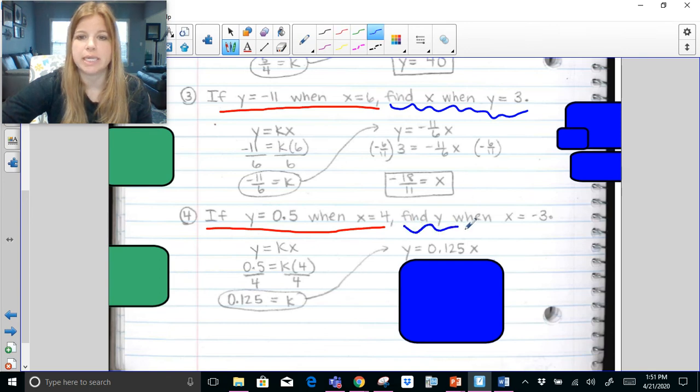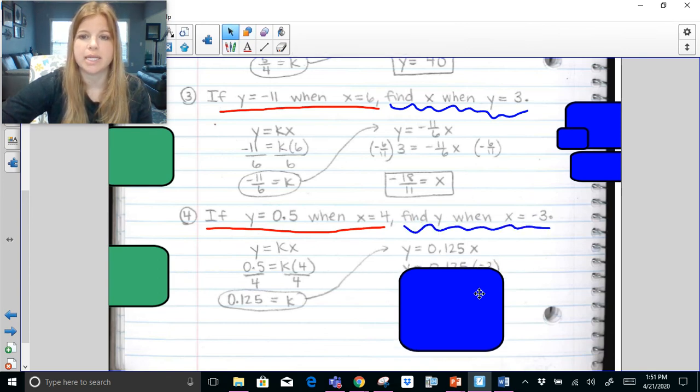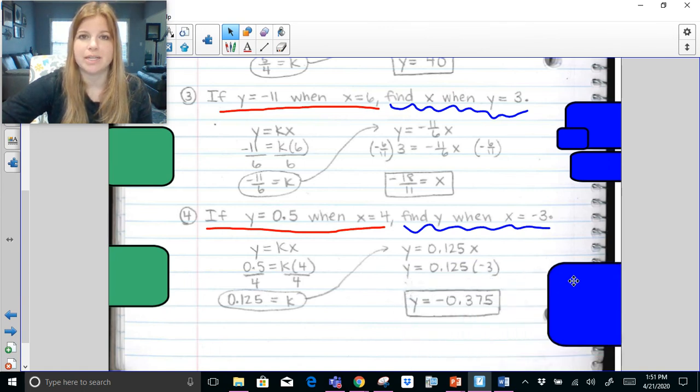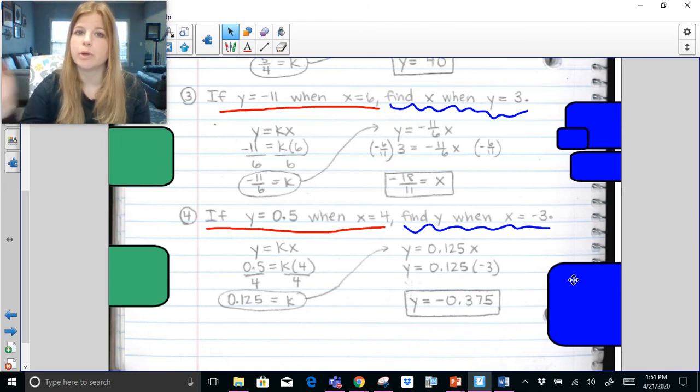Now I can do the second part. Find y when x equals negative 3. And 0.125 times negative 3 is negative 0.375. That's it. I hope this video was easy for you. If you need help graphing direct variation equations, I have a different video for that. Thanks for watching. Bye.